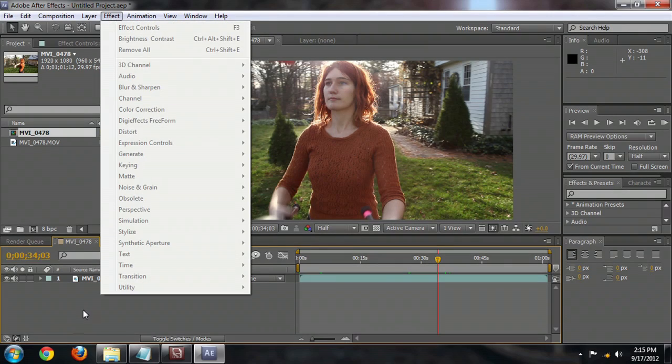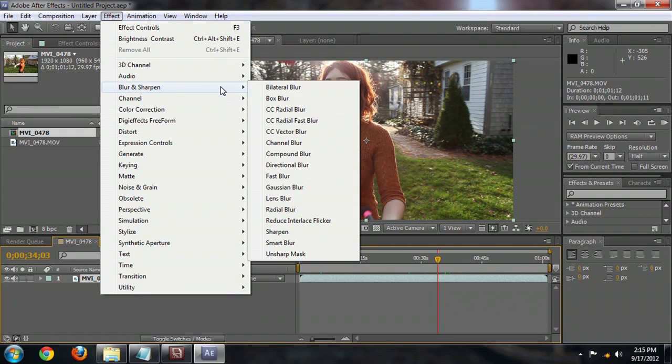Assuming that your install is correct, this is where the lens blur filter lives. So, you move underneath effects and it's going to go underneath blur and sharpen and lens blur will be right there.